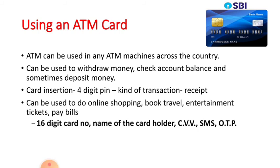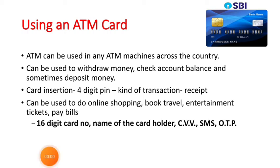ATM cards can be used for online shopping, booking travel and entertainment tickets, and paying bills. While doing all these payments, you have to enter your 16 digit card number, name of the card holder, and the 3 digit CVV mentioned on the back of the card. After entering these three things, the system will send you an SMS on your registered mobile number and you will receive an OTP. OTP means one time password, which you have to enter for these online transactions. Then the system proceeds toward the payment and the transaction succeeds.